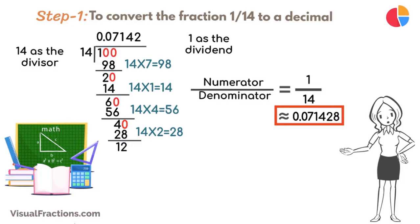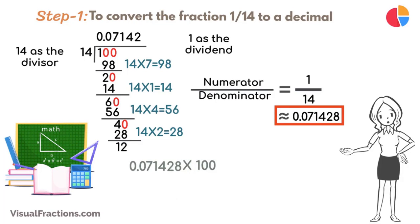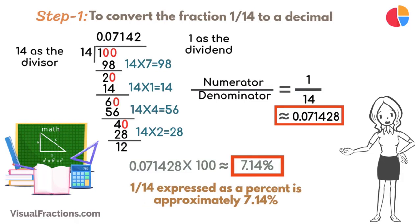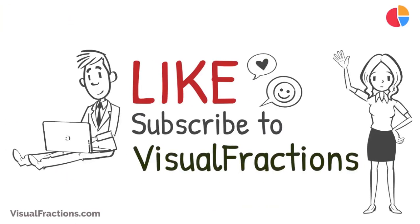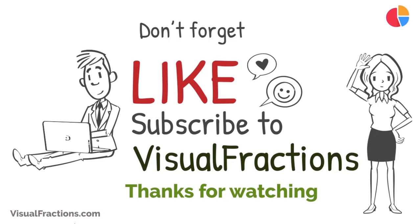Now, to convert 0.071428 repeating to a percent, we simply multiply it by 100, resulting in approximately 7.14%. So, there we have it. The fraction 1/14th expressed as a percent is approximately 7.14%. If this video made it easier to understand how to convert fractions to percentages, don't forget to like and subscribe to Visual Fractions for more math tutorials. Thanks for watching!